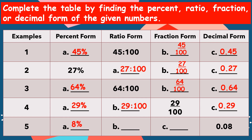For number five, we have 8%. For our ratio, we have 8 is to 100. And for our decimal, we have 0.08 (8 hundredths).